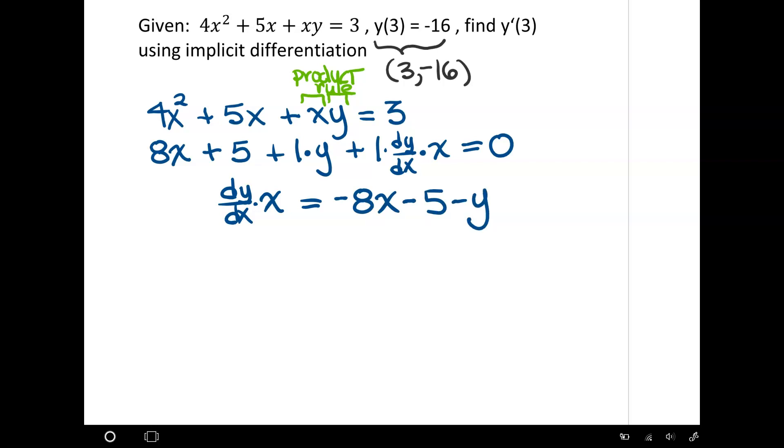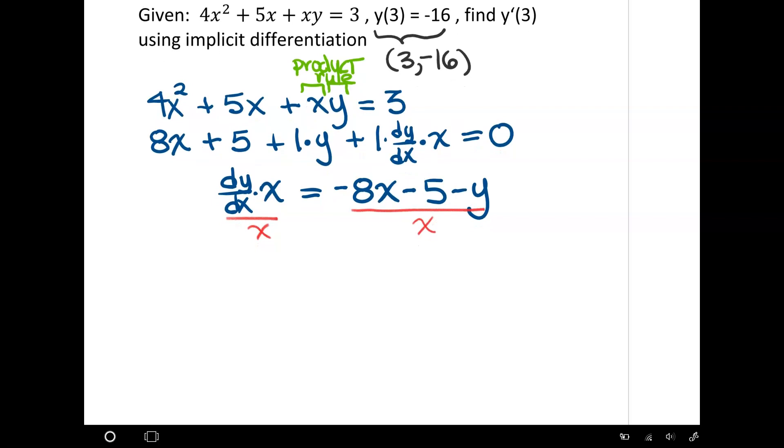And now to solve for dy/dx, I'm going to divide by x. I'm just going to divide this whole thing by x and leave it. There's no real reducing I can do after that. So here's my derivative: dy/dx = (-8x - 5 - y) / x.